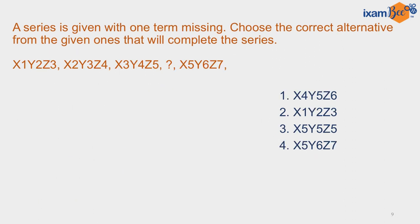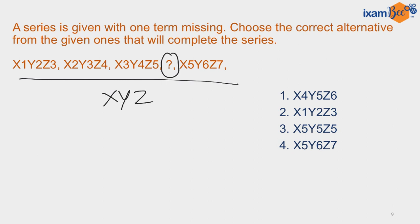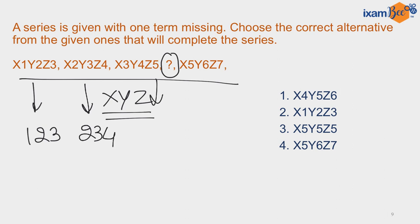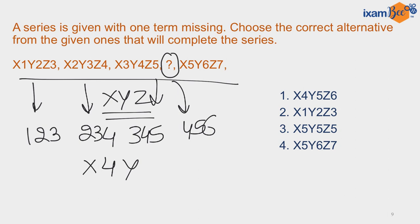An alphanumeric series is given and you have to find the missing term. If you focus carefully, you will find that in all the groups X, Y, Z remain constant. Looking at the numbers, the following pattern is followed: 1, 2, 3 is followed by 2, 3, 4, then 3, 4, 5, and then it should be 4, 5, 6. Since letters and numbers are arranged alternately, the answer should be X4, Y5, Z6. Therefore, option 1 is correct.